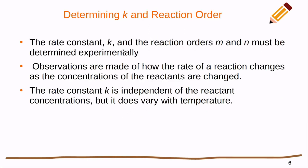The rate constant k and the reaction orders m and n must be determined experimentally. So we need data in order to fit these values. Observations are made of how the rate of the reaction changes as the concentration of the reactants are changed.